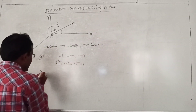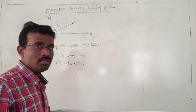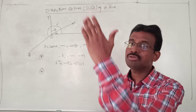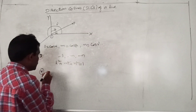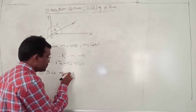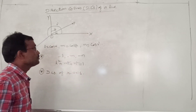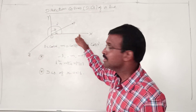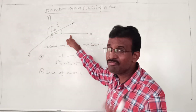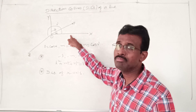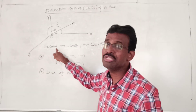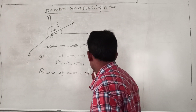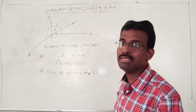Next, let us see direction cosines of the coordinate axes. For direction cosines of the X axis, let us place the OP line on the X axis. Whenever OP falls on the X axis, alpha becomes 0 — there is no angle between them. So cos 0 equals 1. Therefore L equals 1 for the X axis.